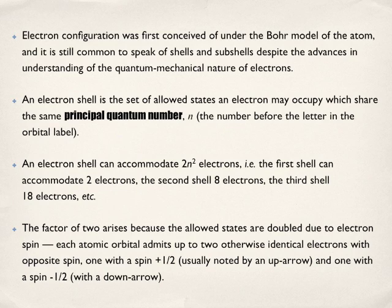So a few terms, and this is what I was telling you about, it might seem to get a little over your head, but I will explain this and simplify this with a couple of examples. So electron configuration was first conceived of under the Bohr model of the atom. So this is something that we looked at in grade nine, the Bohr model of the atom. And it's still common to speak of shells and subshells despite the advances in understanding of the quantum mechanical nature of electrons.